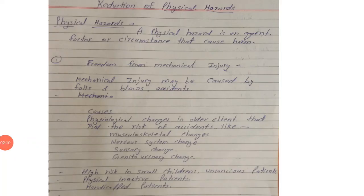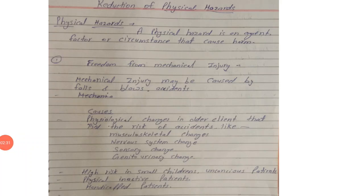In older age, the patient's signs can change. In the nervous system, the patient is unaware of surroundings — he doesn't know anything, or he can also forget things. So these are all changes in old age.